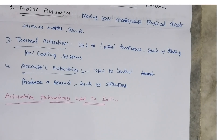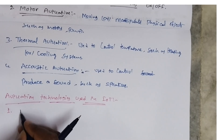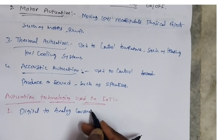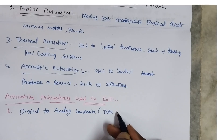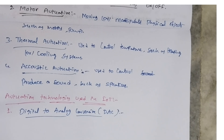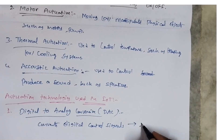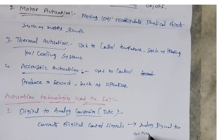The first actuation technology is Digital to Analog Conversion, called DAC. DAC converts a digital control signal into an analog signal for actuation. Digital signals are converted into analog signals to drive actuators.